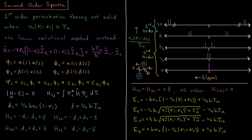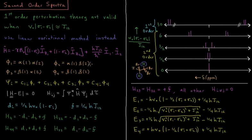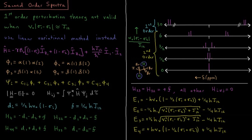In the linear variational method, we build a basis set of trial functions. Here those are the spin-up spin-up, spin-up spin-down, spin-down spin-up, and spin-down spin-down functions for nucleus one and nucleus two. Each of our wave functions is a linear combination of these, and then we use the secular determinant method as described in the linear variational method video to solve for the four energies from these four basis functions.